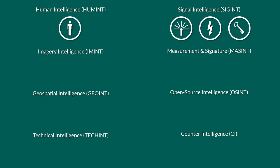Imagery intelligence was once called photographic intelligence, which includes information gathered by observation balloons, reconnaissance, and up to satellites. It is not limited to photographs anymore — it also includes all kinds of imaging technology, like radar and infrared sensors.